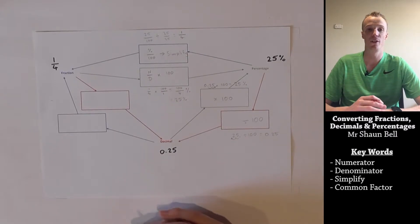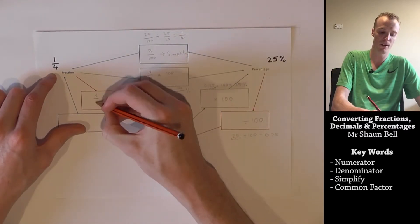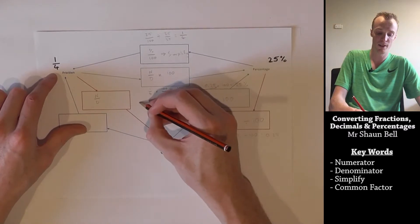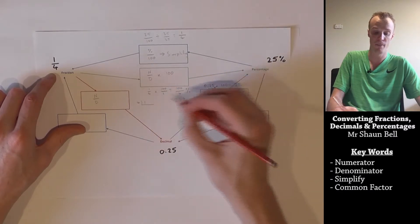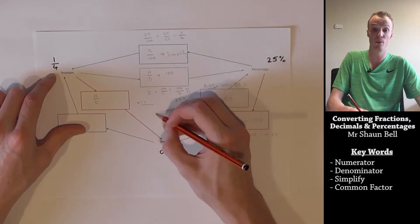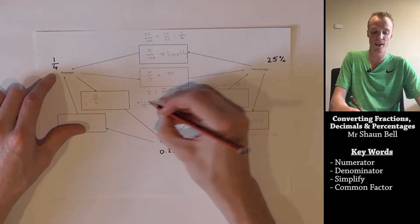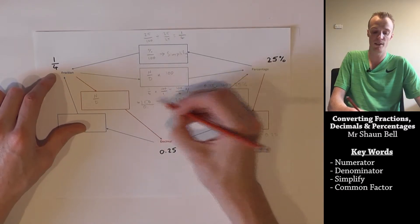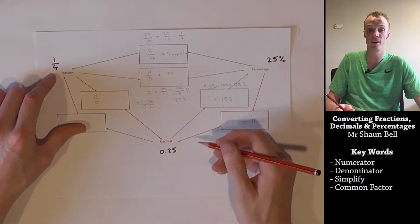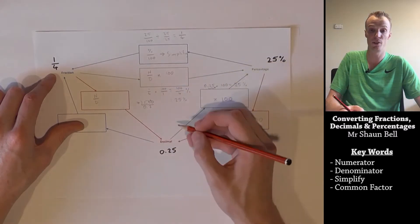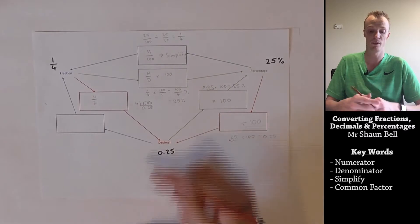Next, let's look at converting the fraction 1 over 4 to a decimal. To do this, we simply take the numerator and divide it by its denominator. We take the denominator of 4 and divide it into the numerator of 1. 4 doesn't go into 1, so we put a 0, place the decimal, and extend. 4 goes into 10 twice with a remainder of 2. 4 goes into 20 five times, giving us our answer of 0.25.